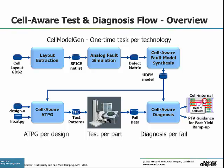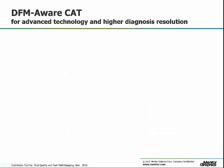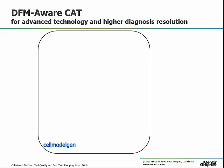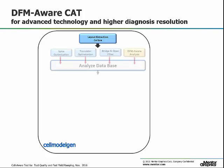This approach has proven to increase test quality, meaning lower DPPM, and also increases diagnosis resolution, helping achieve quick yield ramp. Mentor implemented this technology in its CellModelGen tool, where defects are extracted from cell physical information stored in a layout-extracted SPICE parasitic netlist. Optimization and filtering algorithms based on DFM and other physical rules extract a practical and realistic defect list.